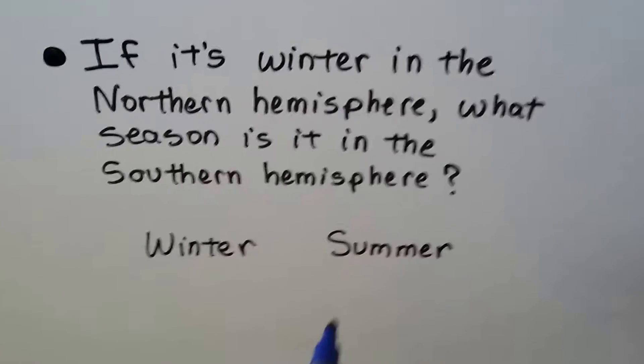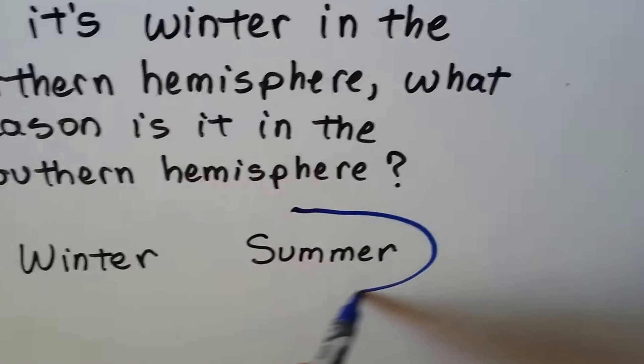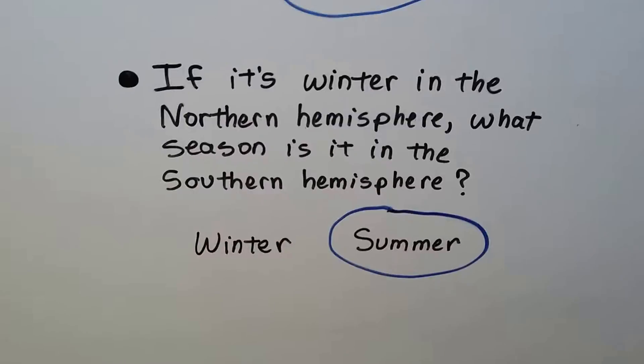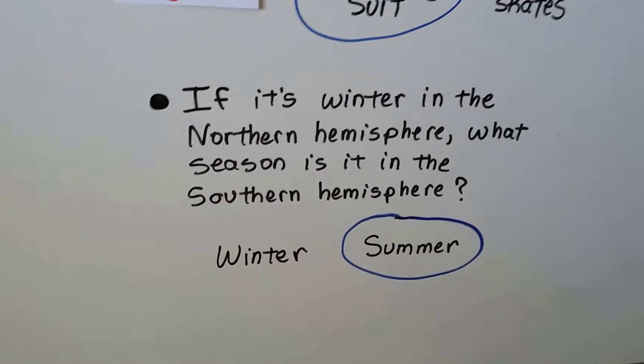It would be the opposite. And the opposite of winter with ice and snow and cold would be summer with heat and warmth, wouldn't it? So our answer would be summer. That's the opposite. So the hemispheres, the northern and southern hemispheres, have opposite seasons.